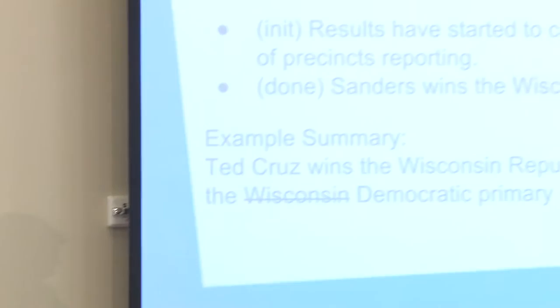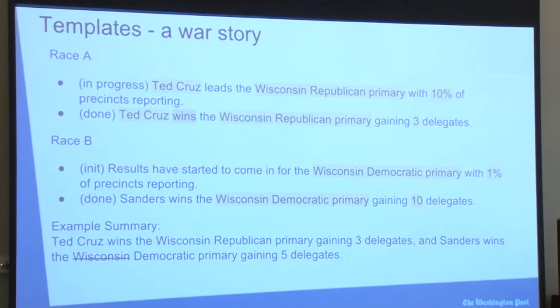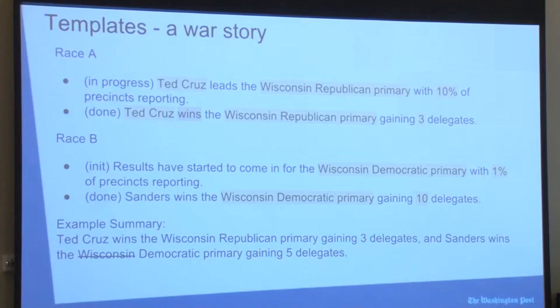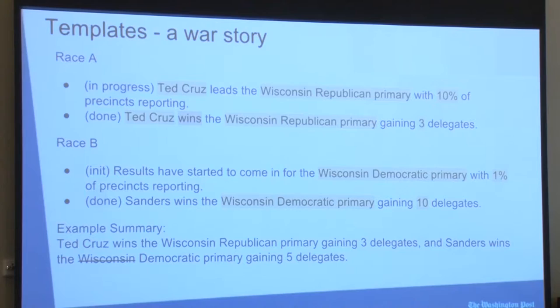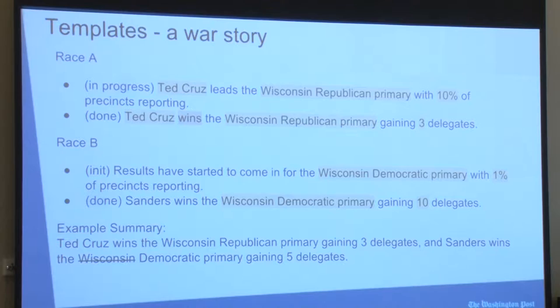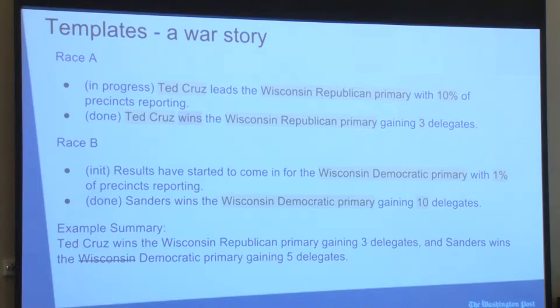One way to perform surface realization is through templates — simple Mad Lib-style blobs of text combined with data to create a story. While templates have their place, we found them to be a pain when creating more complicated or nuanced stories. In the primaries, we want to generate a sentence summarizing what's going on in a particular state, talking about two things in context of each other — the Republican and Democratic races. No assumptions can be made in the realm of elections: you can't assume each state has two races, that they'll both be primaries or caucuses, or that the polls will close at the same time.